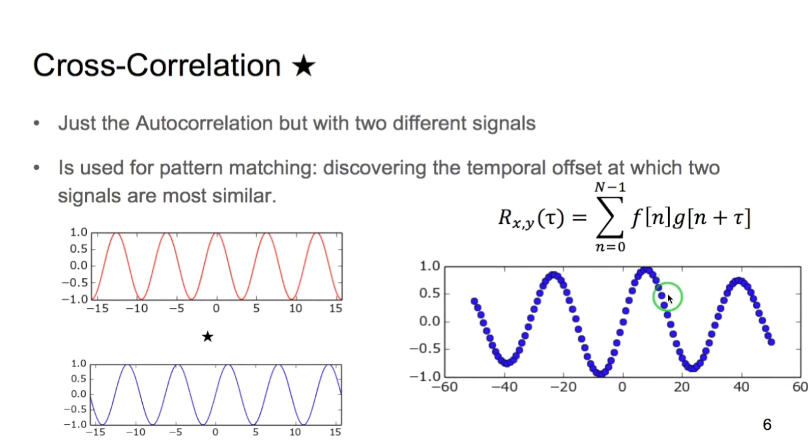The second transform is the cross-correlation, which is also denoted by five-point star. And the reason that it uses the same notation is because it's the same operation. The only difference is, instead of having the same signal, it's applied to two different signals. And it's most often used for pattern matching, or phrased more technically, to find the temporal offset between two similar signals.